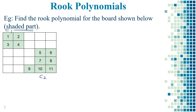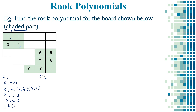Now let us find the rook polynomial for board C1 first. With observation, R1 equals the total number of squares, which is 4. R2 can be calculated for the placement of two rooks: placements are (1,4) and (2,3), hence R2 equals 2. For R3, we can see there is no room for the third rook, so R3 equals 0. So the rook polynomial is R of C1(x) equals 1 plus 4x plus 2x squared.